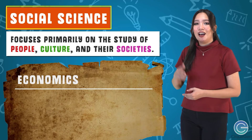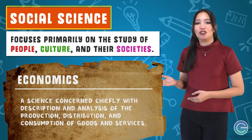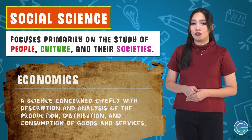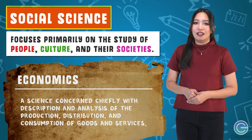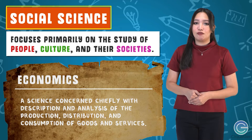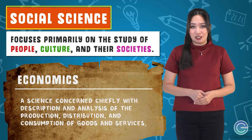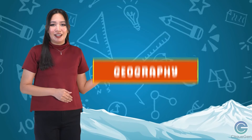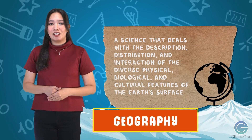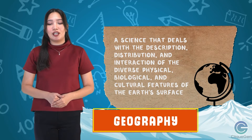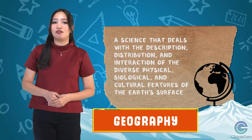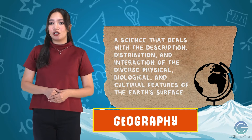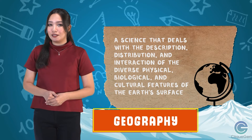The social sciences include economics, a science concerned chiefly with description and analysis of the production, distribution, and consumption of goods and services; and geography, a science that deals with the description, distribution, and interaction of the diverse physical, biological, and cultural features of the earth's surface.